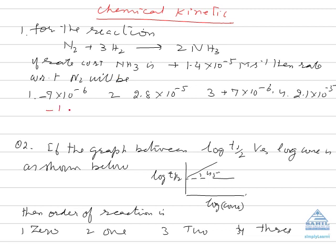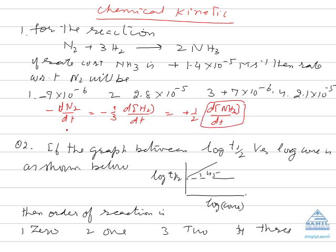In order to equalize the reaction rate, divide them by their stoichiometric coefficients. So we can write -d[N₂]/dt = ½ × d[NH₃]/dt. The value of rate with respect to ammonia is given, so the rate with respect to nitrogen will be equal to half of the rate of reaction with respect to ammonia. The minus sign only tells you that the concentration is decreasing. So the correct answer is ½ × 1.4 × 10⁻⁵ = 7 × 10⁻⁶.